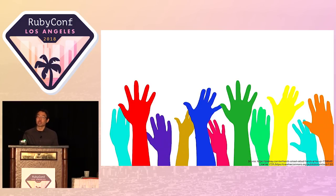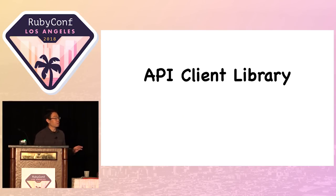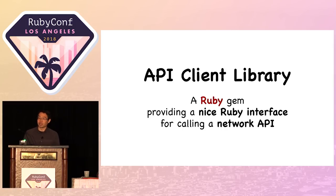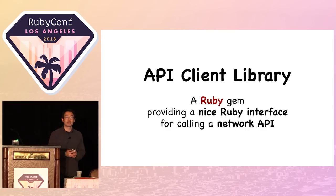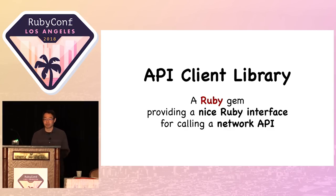In this hour, we're going to talk about APIs. In particular, we're going to focus on client libraries — API client libraries. A client library is a Ruby gem, a Ruby library, that provides a nice Ruby interface for calling a network API.